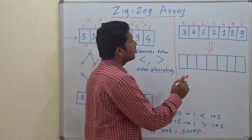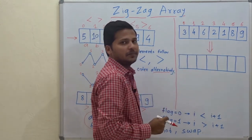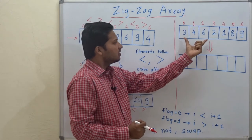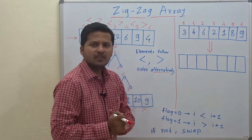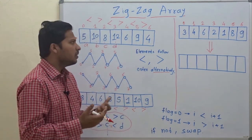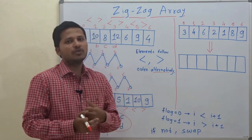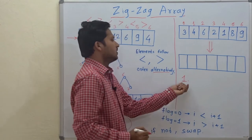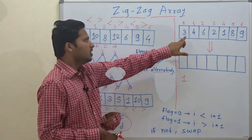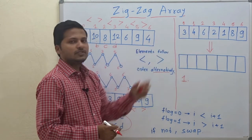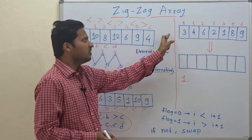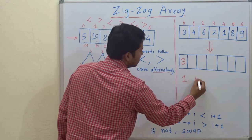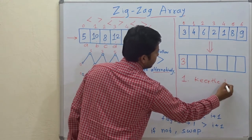Now we will see how to convert a normal array into a zigzag array. If there are very few numbers we can do it easily by inspection, but if there are thousands of numbers we need an algorithm. The first step in the algorithm is to keep the first element as it is, because the first element has only one neighbor and you cannot compare it with a previous element.